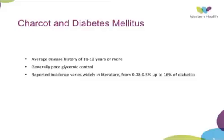Studies show that if you're a type 1 diabetic, you need to have diabetes for around 20 years to actually develop Charcot. However, for type 2 diabetics, you only need to be diagnosed for around 5 to 7 years, depending on which paper you read. Generally there's poor glycemic control associated with these patients, and the reported incidence varies from anywhere between half a percent up to 16 percent of diabetics with some form of Charcot arthropathy.